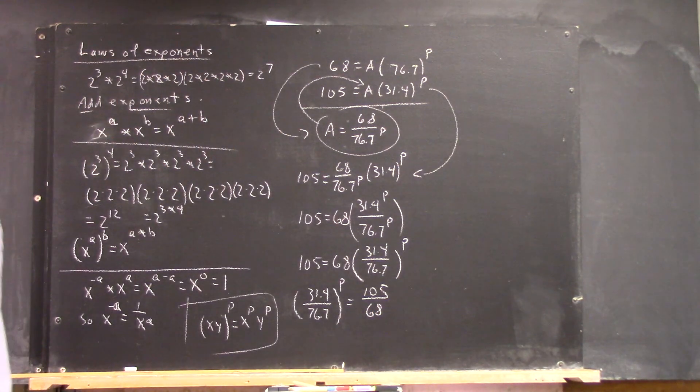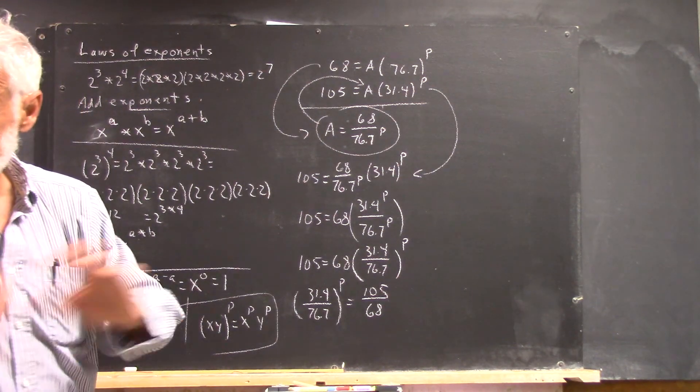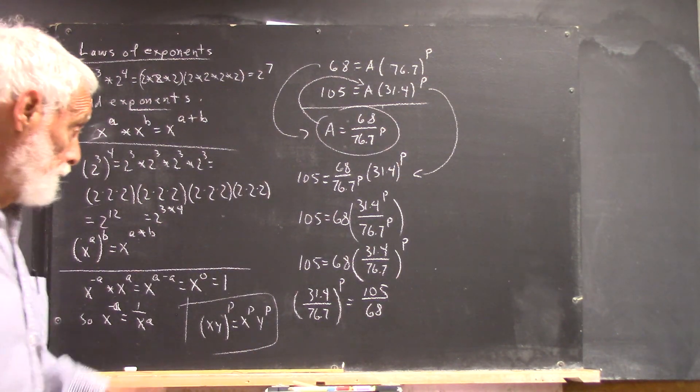We get this. Clearly. Yeah, just dividing both sides by 68 and reversing the sides. Okay, everybody's okay with that.